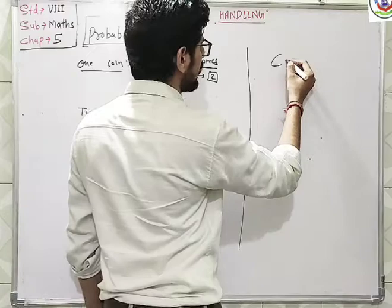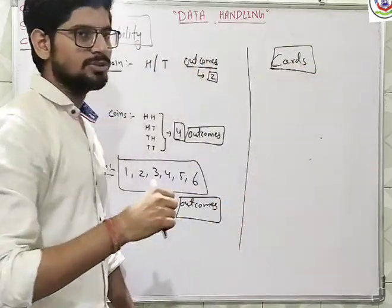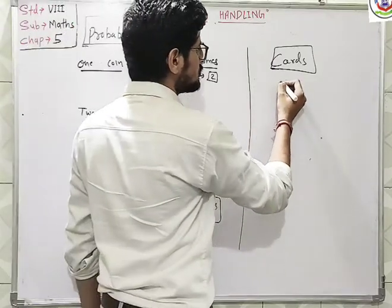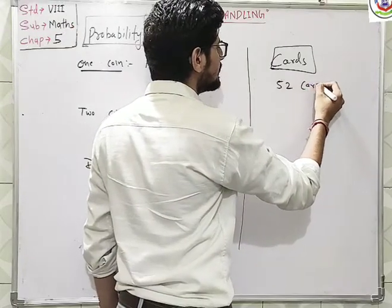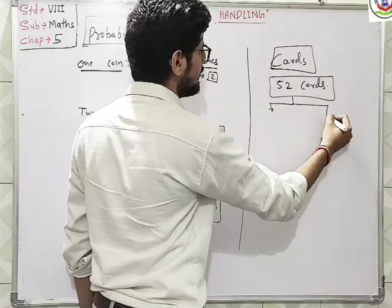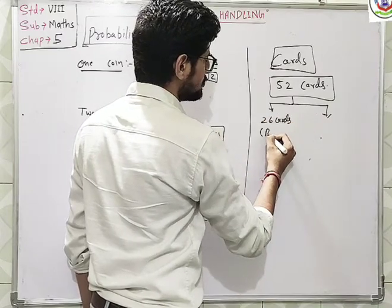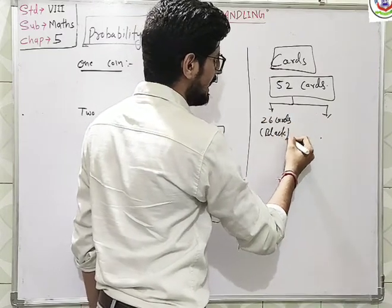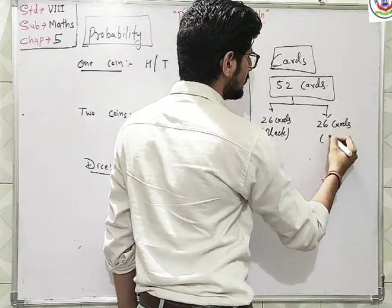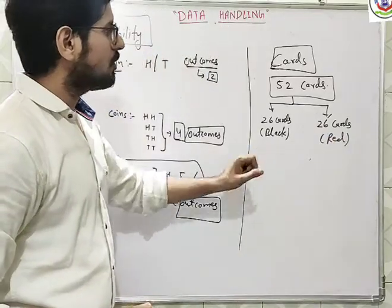Next is about cards, playing cards. You must know, total number of cards is 52 cards, in which there are 26 cards.